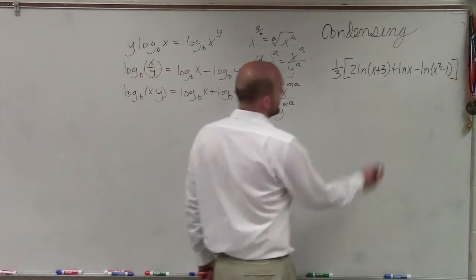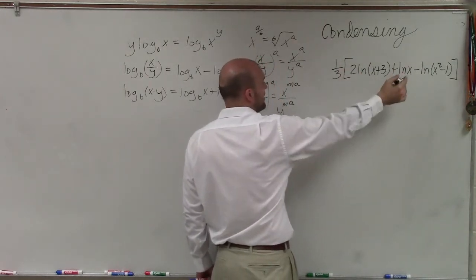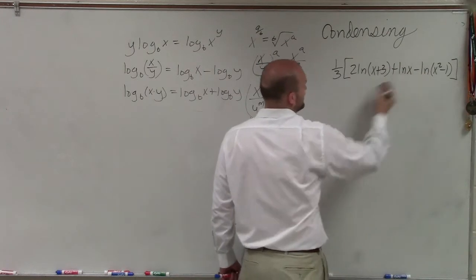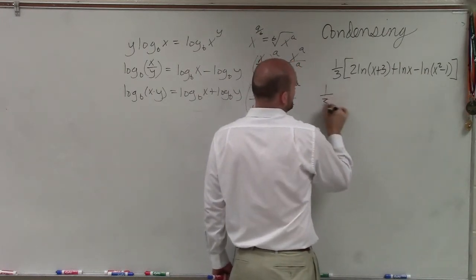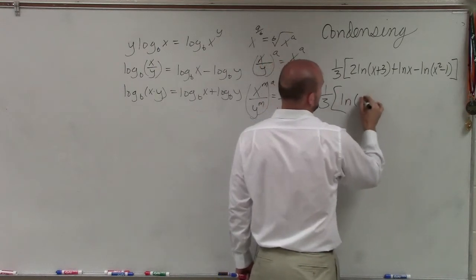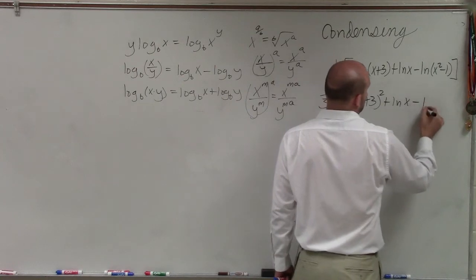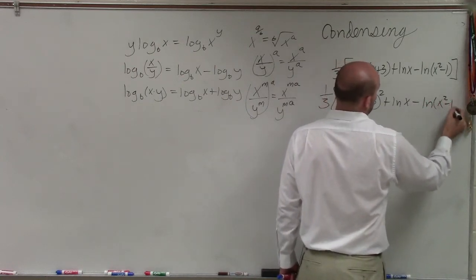OK. So I'm simplifying a problem like this. What I can do is before I raise this 1/3 to the power, I need to make sure I can combine these. So the first thing I'm going to do is use my power rule. Therefore, I have ln(x+3)² plus ln(x) minus ln(x²-1).